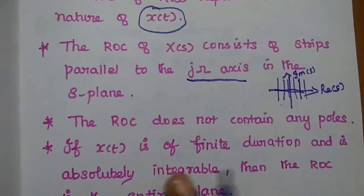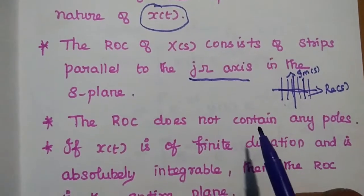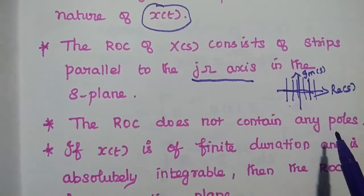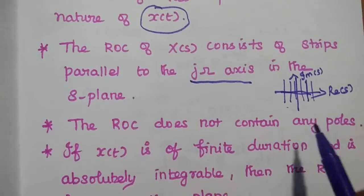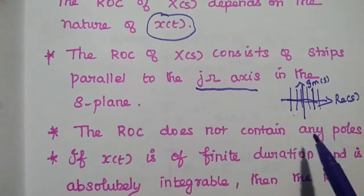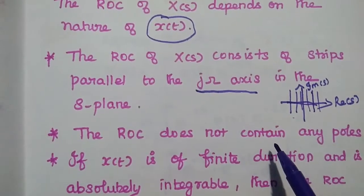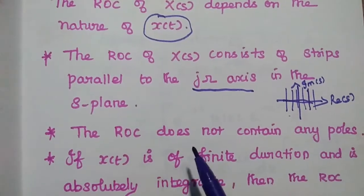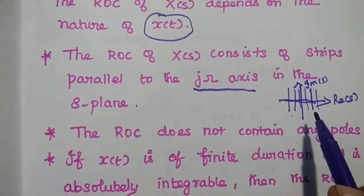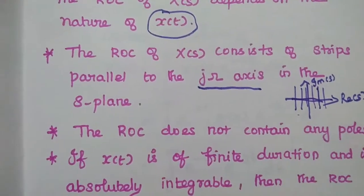The next property is that the ROC does not contain any poles — that is very important. Within the ROC there is no pole. That means if there is a pole, it is not satisfying the absolutely integrable condition. The ROC should not contain any poles. If there is a pole, then that transform is an indeterminate one.